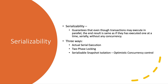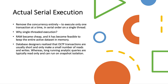We will look at one of them in this video. So let's first look at actual serial execution. What is the easiest way to solve the concurrency problems? The easiest way is to remove the concurrency entirely — basically to execute only one transaction at a time in a serial order on a single thread. But in the past we identified that multi-threaded execution is used for good performance, so why are we suggesting now to move to single-threaded execution?